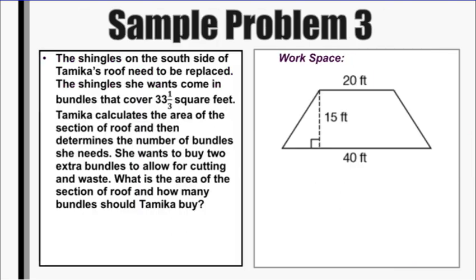And we have one final problem. Shingles on the south side of Tamika's roof needed to be replaced. The shingles she wants come in bundles that cover 33 and 1/3 square feet. Tamika calculates the area of the section of the roof and then determines the number of bundles she needs. She wants to buy two extra bundles to allow for cutting and waste.